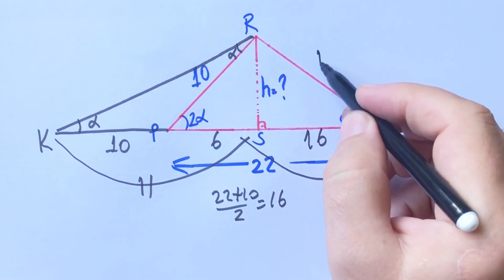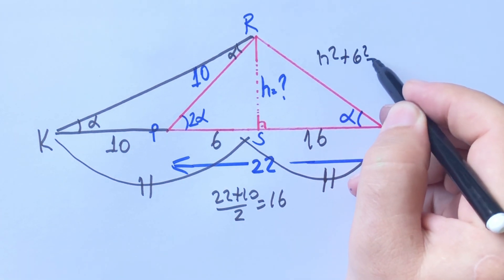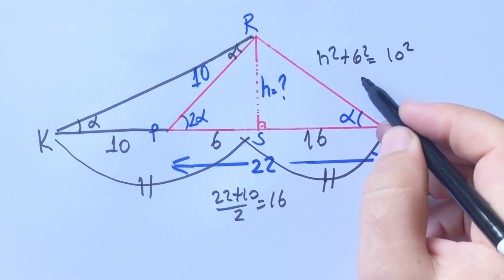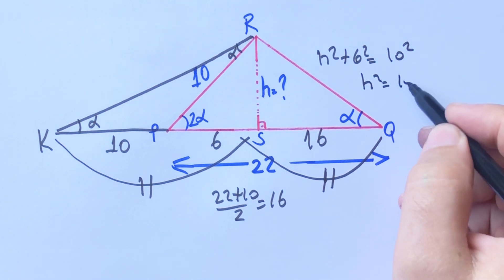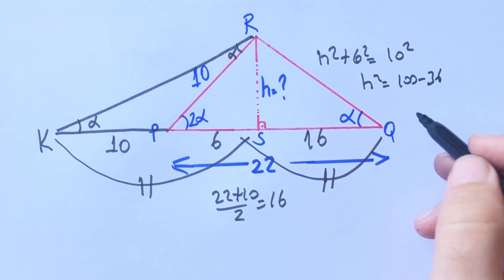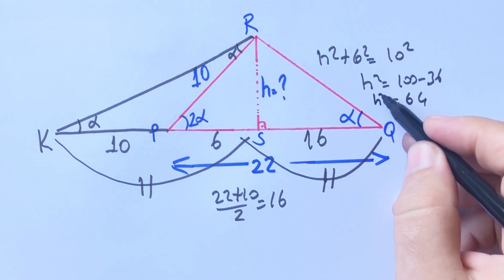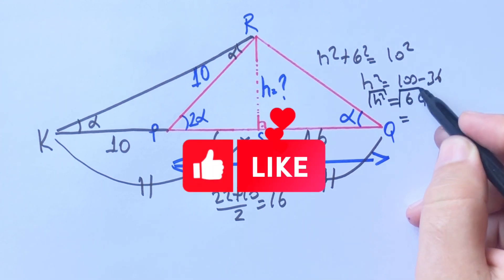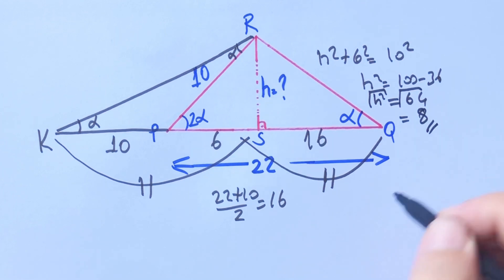And if we apply Pythagorean theorem in this triangle, H squared plus 6 squared equal 10 squared, H squared equal 100 minus 36 and let's square root both sides, H is going to be 8 units.